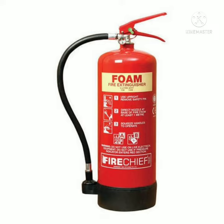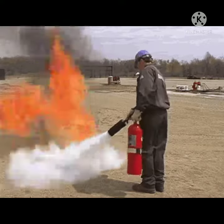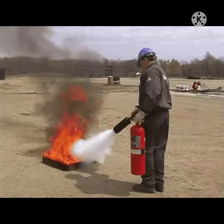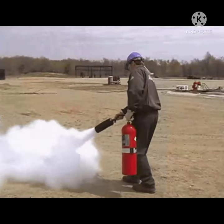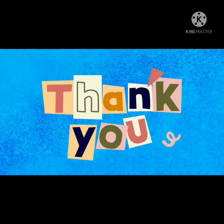Third is the foam type fire extinguisher. A solution of sodium bicarbonate and aluminum sulfate stored in separate sections mix when the extinguisher is inverted. The resulting foam mixture floats on the burning liquid and extinguishes the fire.